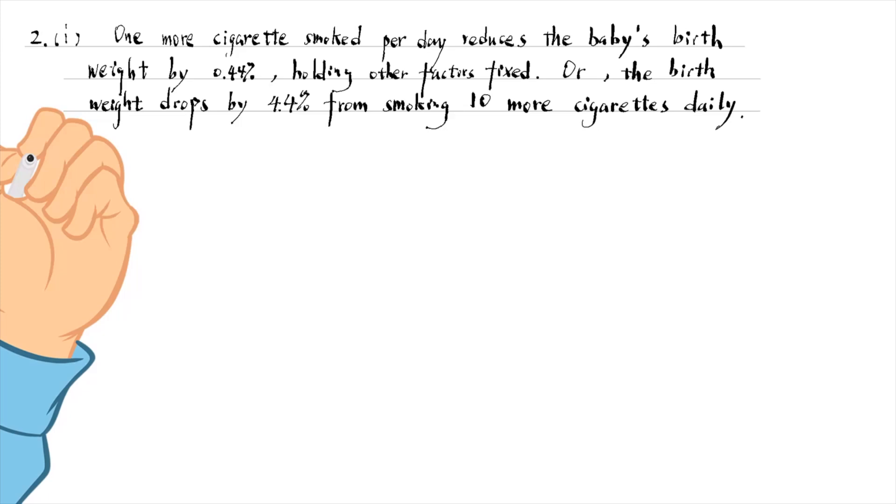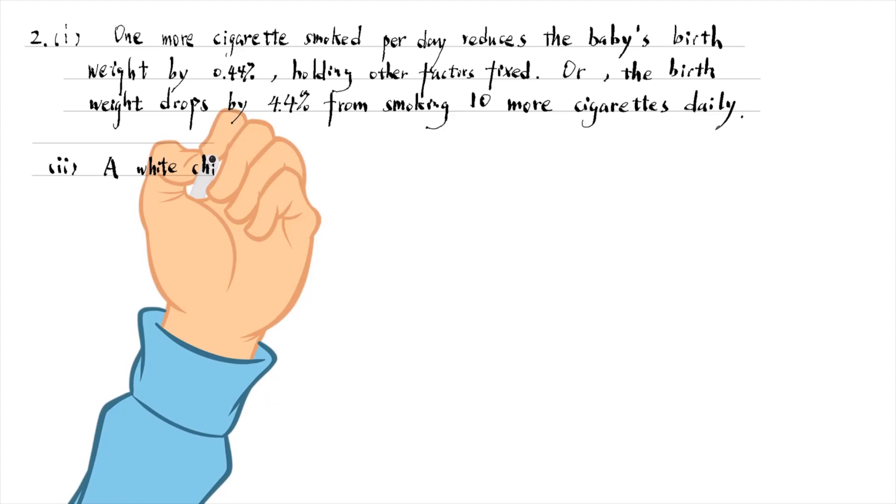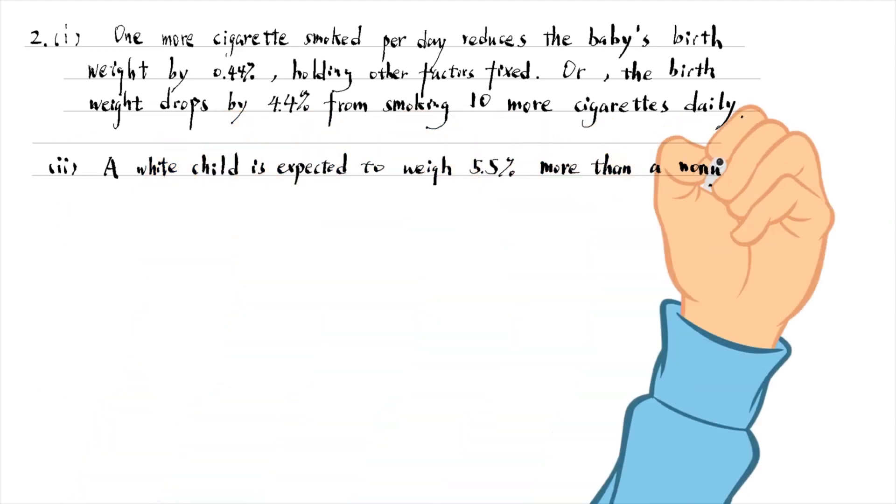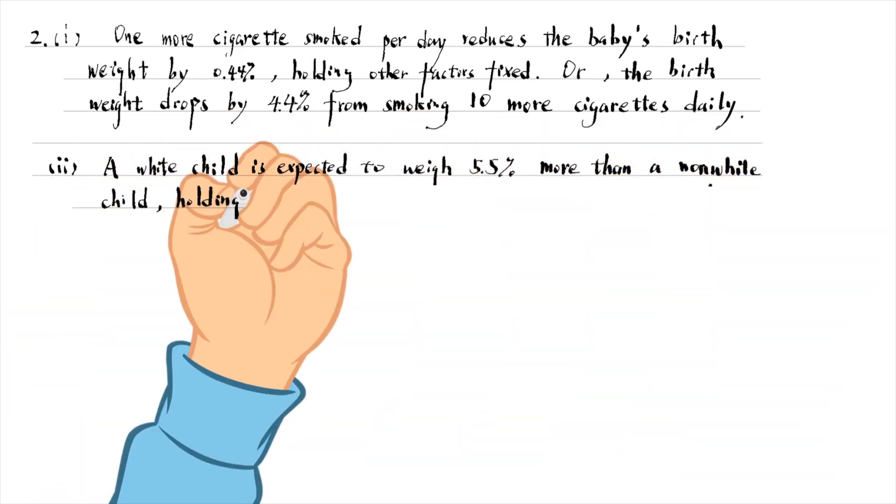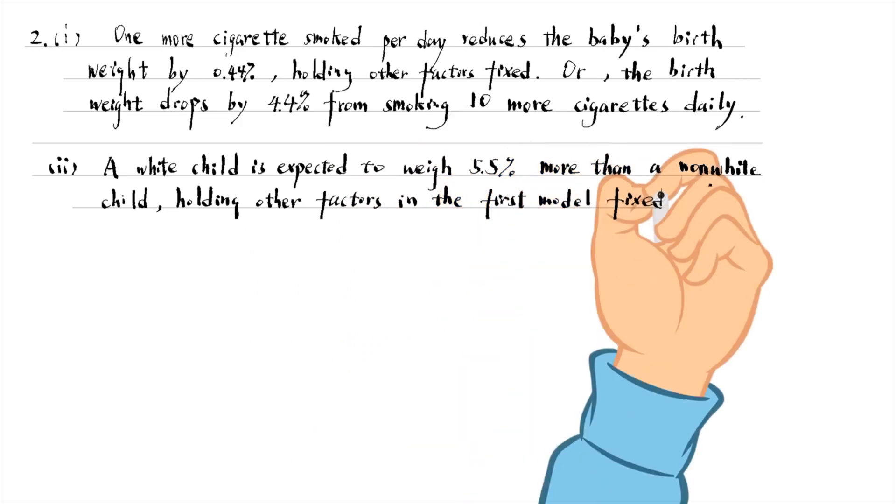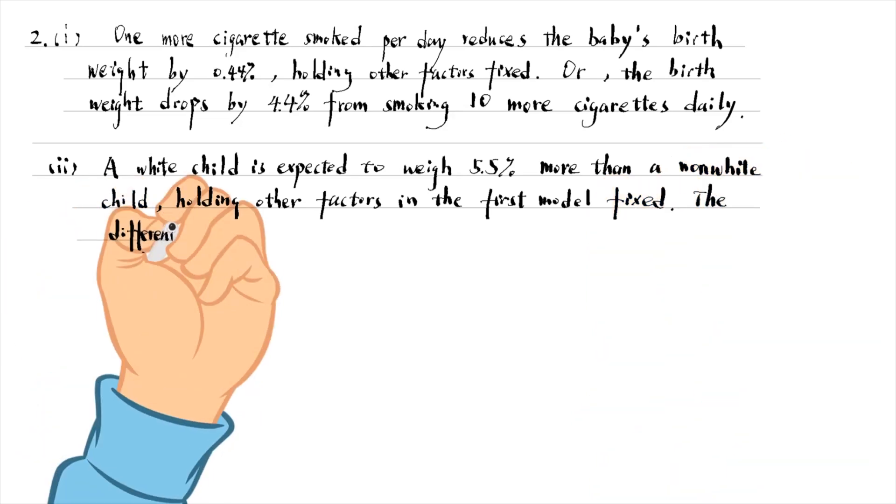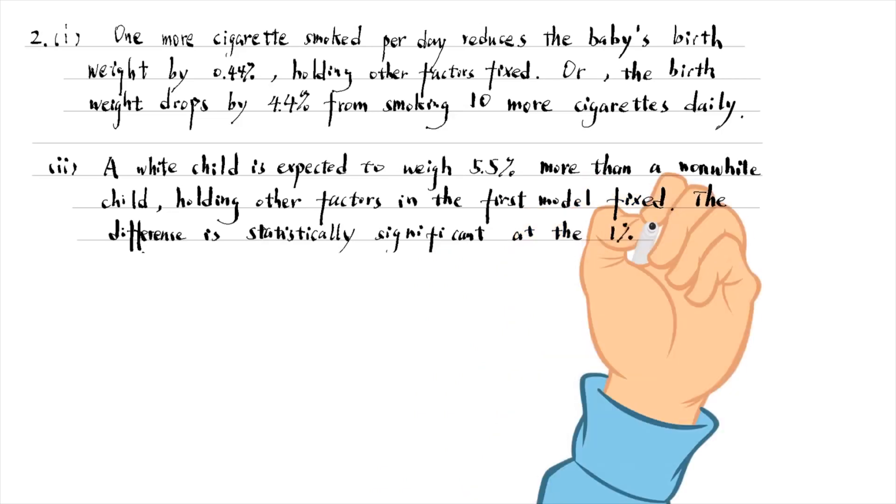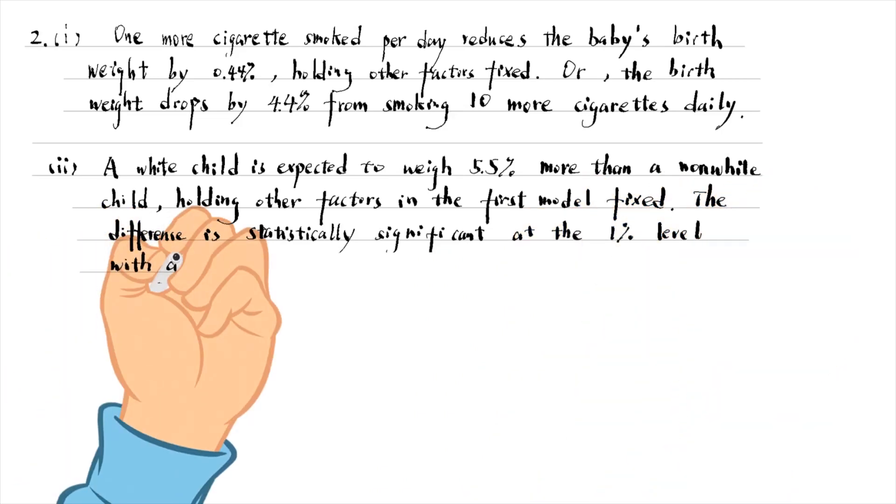In part two, we find that a white child is predicted to weigh 5.5% more than a non-white child, holding other factors in the first model fixed. The difference is statistically significant at the 1% level with a t-statistic of 4.20. A more precise estimate is 5.6%.